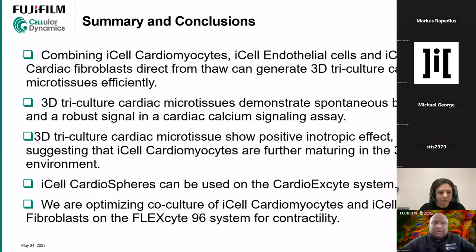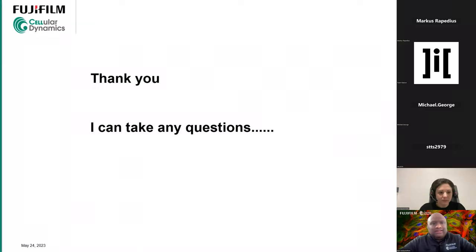In summary: combining iCell cardiomyocytes, iCell endothelial cells, and iCell cardiac fibroblasts directly from thaw can efficiently generate 3D tri-culture cardiac microtissues. These microtissues demonstrate spontaneous beating, robust calcium signals, and positive inotropic effects — suggesting cardiomyocytes are further maturing in the 3D environment. The iCell cardiac spheres can be used on the CardioExcyte system using available magnetic options. We are also optimizing the co-culture of iCell cardiomyocytes and iCell cardiac fibroblasts on FlexSite and hope to have something available soon.